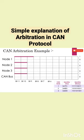At the 9th bit, node 1 will send a recessive bit. But due to node 2 and node 3 sending a dominant bit, the bus state will remain at dominant. Here, node 1 has lost the arbitration and stops sending further bits.